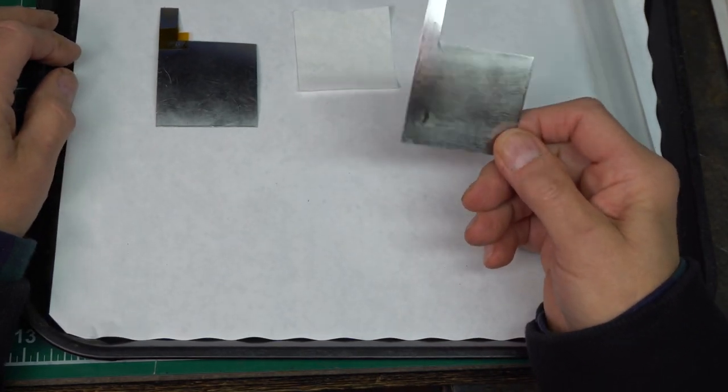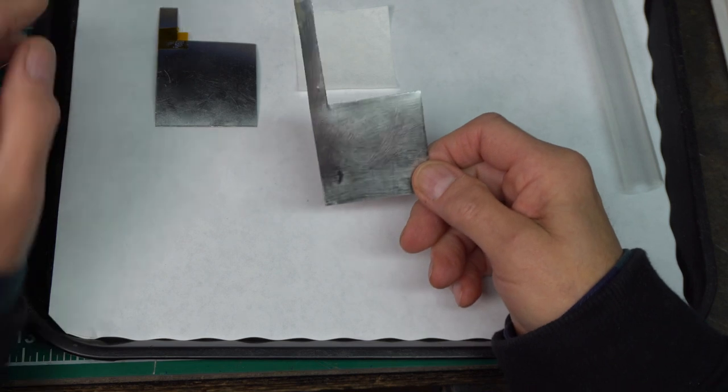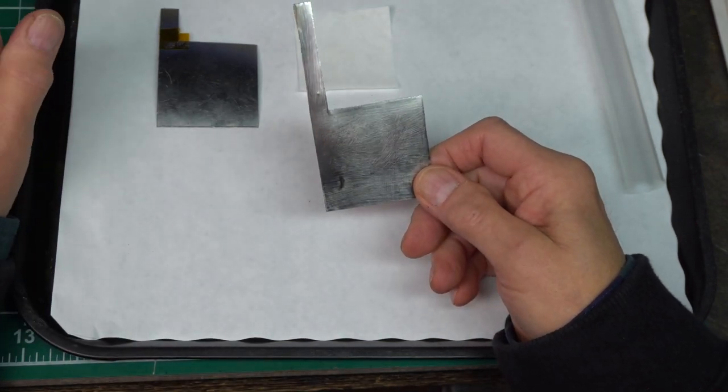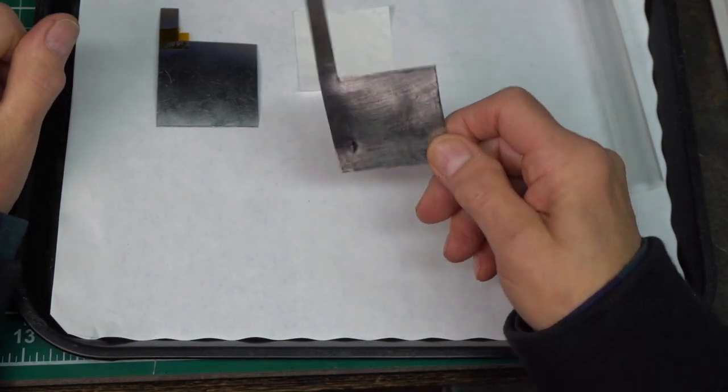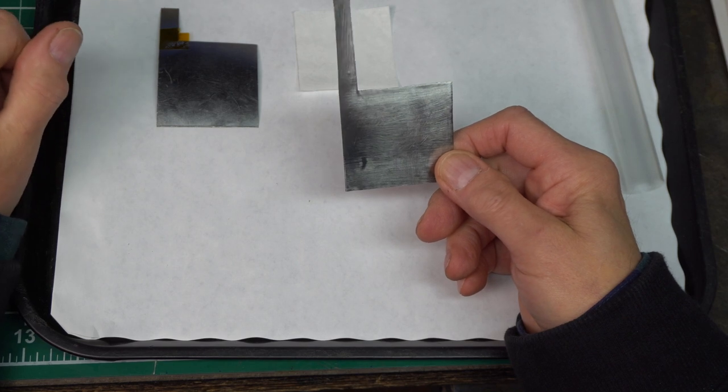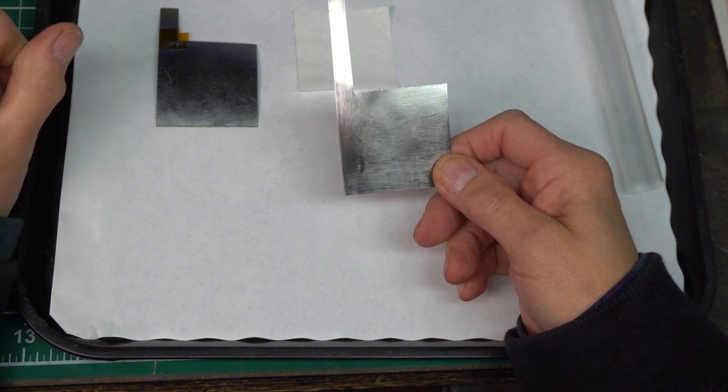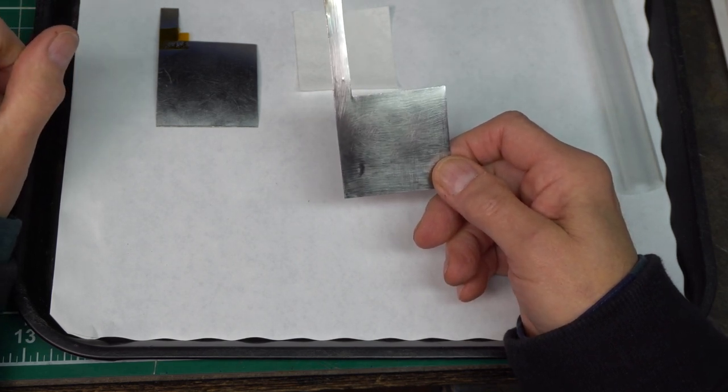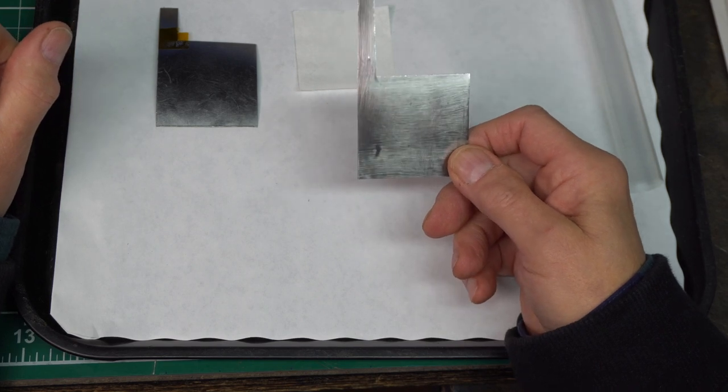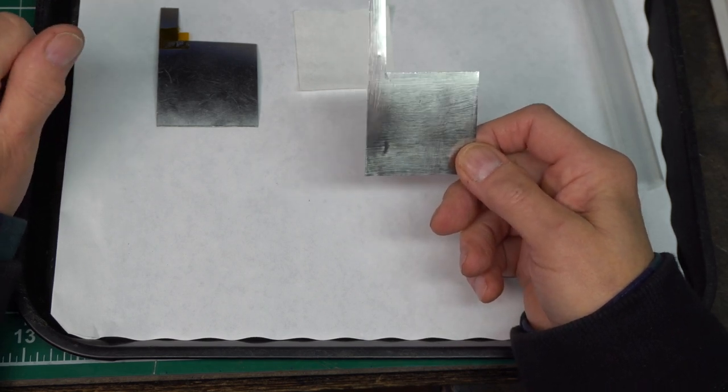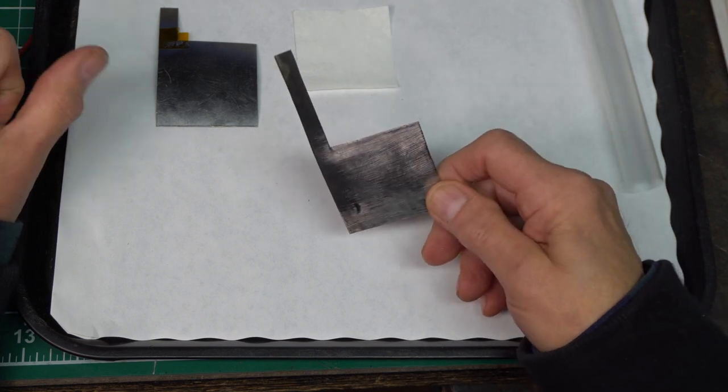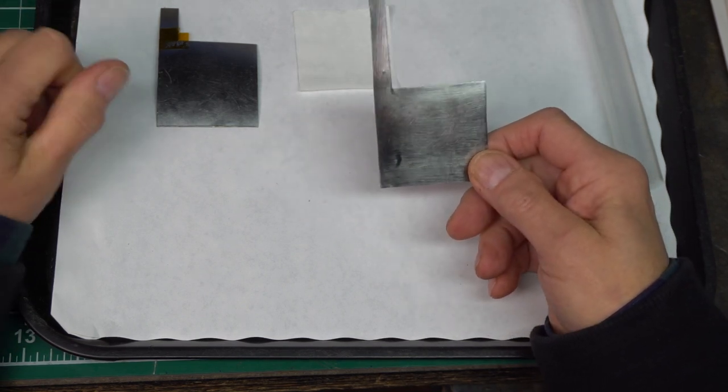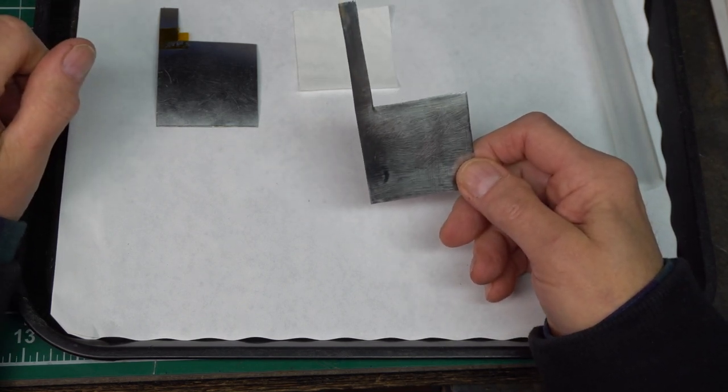I repeat, do not use stainless steel for the anode because your cell will not work. Actually on eBay, I got fooled and was really confused for a while there. Why my cell wasn't working, because the seller said that it was 100% iron, but come to find out it was actually stainless steel and my battery just, the cell never worked.